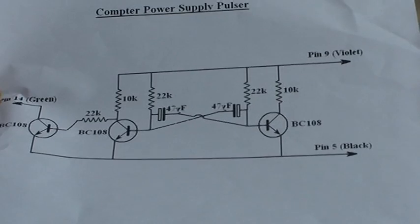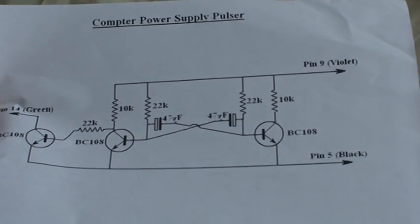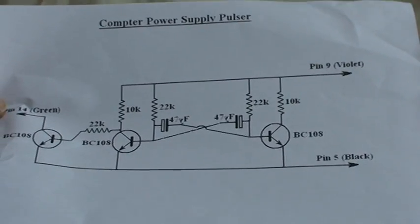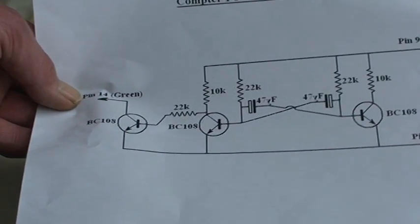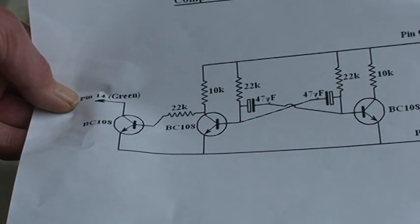Pin 9 is the plus 5 volts standby, pin 5 is the zero volts, and pin 14, the green lead, is the trigger input to the motherboard plug.